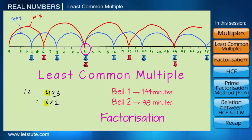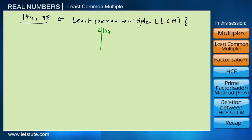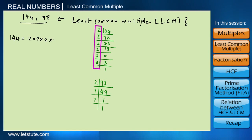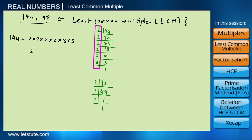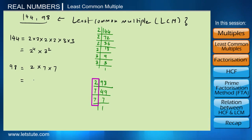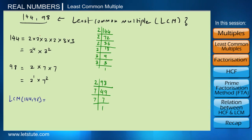Let's factorize 144 and 98 using the factorization method. After factorization, we can write 144 as 2 raised to 4 times 3 raised to 2, and we can write 98 as 2 raised to 1 times 7 raised to 2.